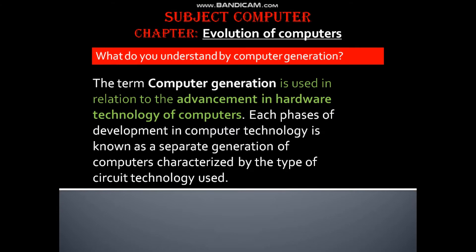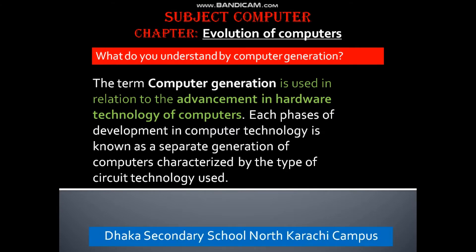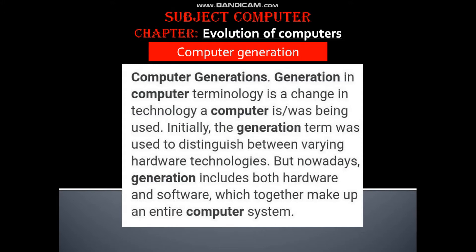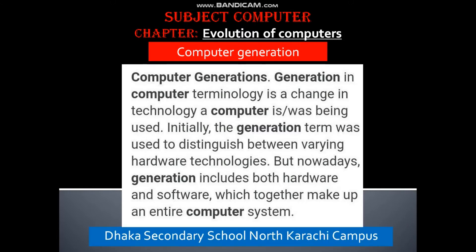The term computer generation is used in relation to the development and advancement in hardware technology of computers. Each phase of development in computer technology is known as a sub-generation of computer, characterized by the type of circuit technology used. The generation term was used initially to distinguish between hardware technologies, but nowadays generation includes both hardware and software, which together make up an entire computer system.